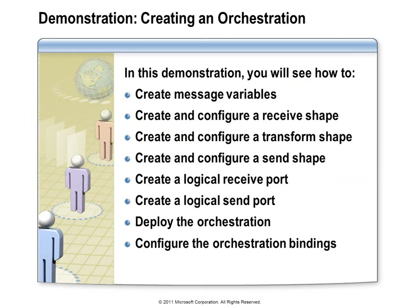In this demonstration, I'll show you how to create a simple orchestration using the receive shape, send shape, transform shape, and construct message shape. This orchestration will accept a sales order message, map it to a restock message, and send that out. We'll declare two message variables — one for the sales order and one for the restock message — set up the transform shape to map the sales order to the restock message, and set up the send shape. We'll include a logical receive port and a logical send port, then compile the orchestration, deploy it to the BizTalk runtime, complete the configuration steps, start the orchestration, and test it.